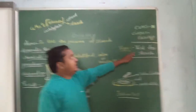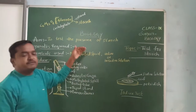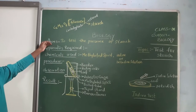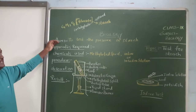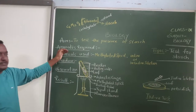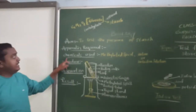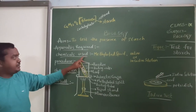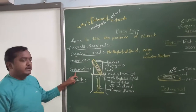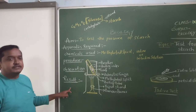Today's topic is: test to detect starch. In this activity we have a procedure to follow: first the aim, second the apparatus requirements — what materials we need — then chemicals used, procedure, observation, and results.